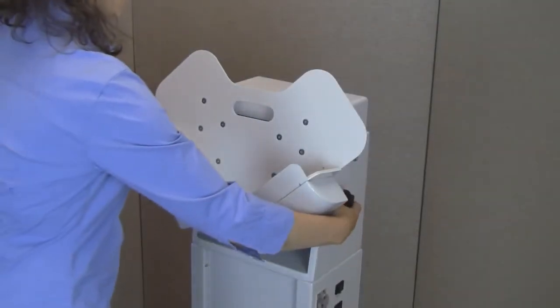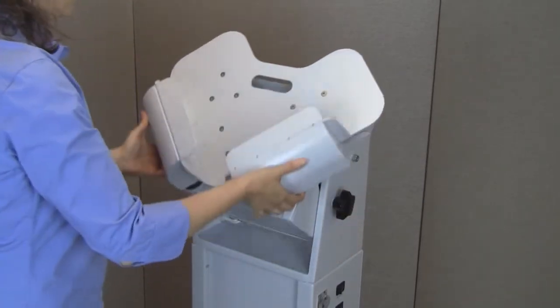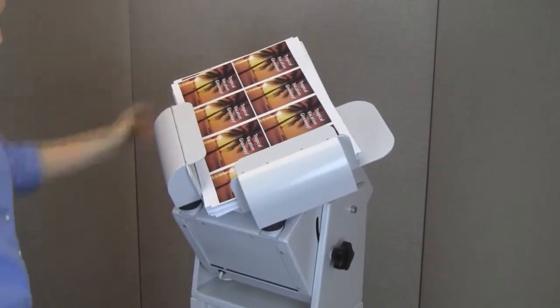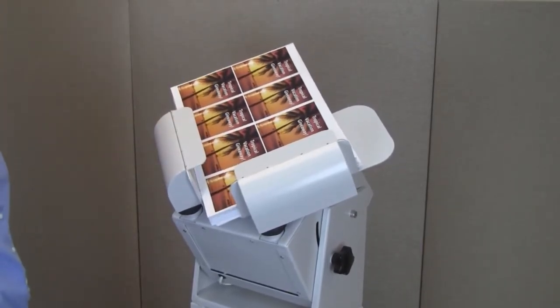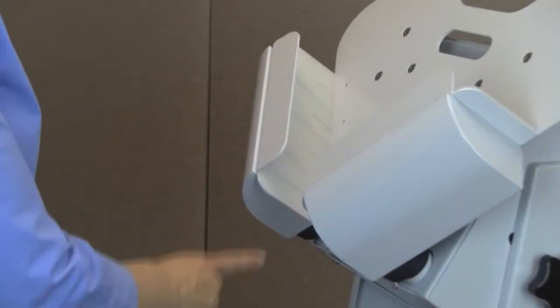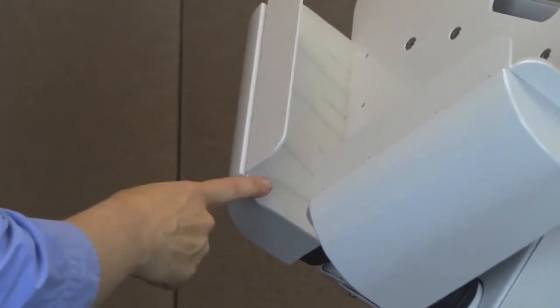The paper tray is adjustable up or down for best jogging results of different paper weights and sizes. The tray also features rubber padding to reduce vibration noise.